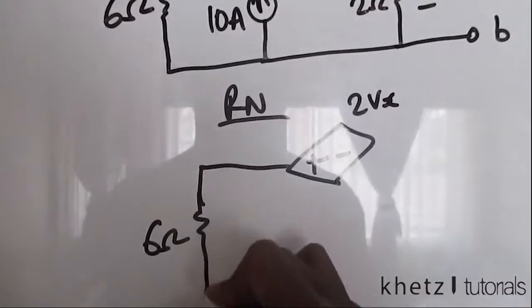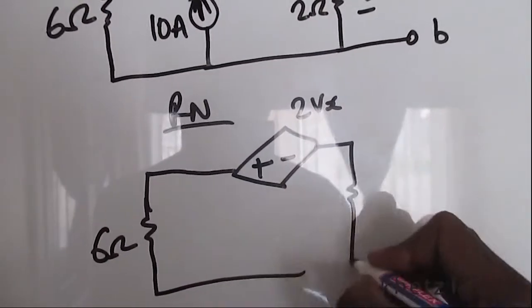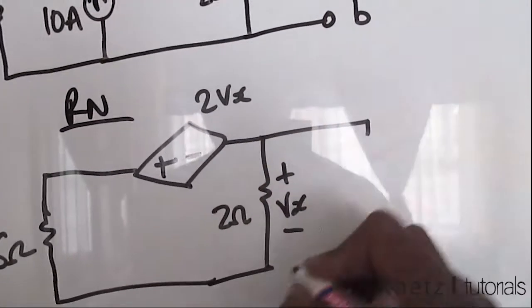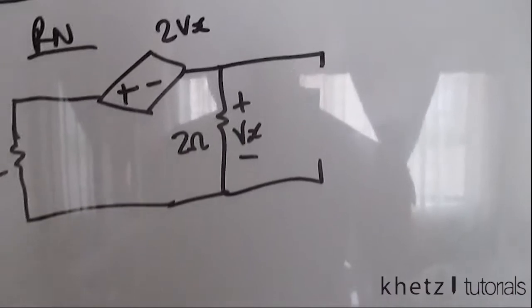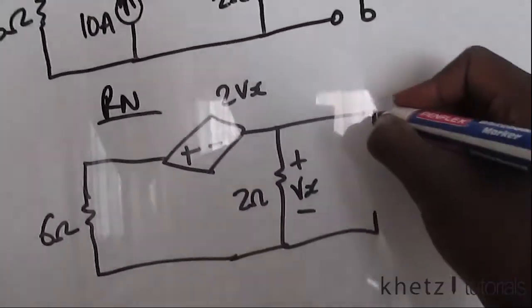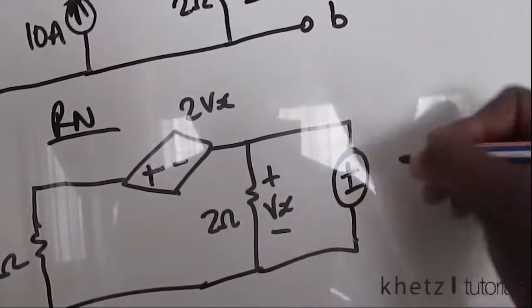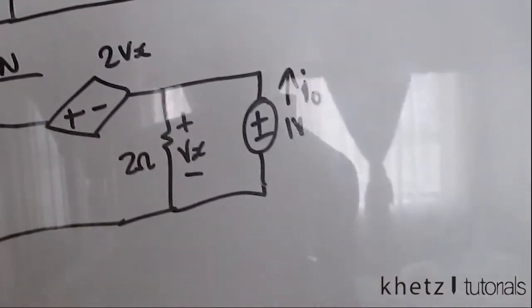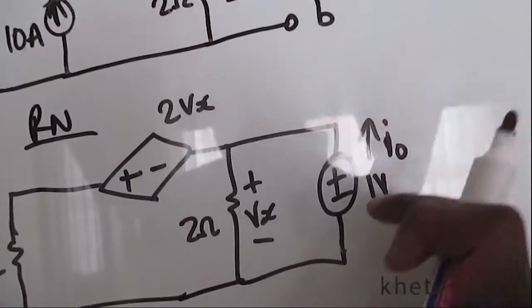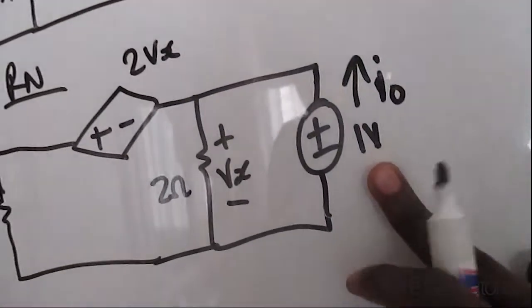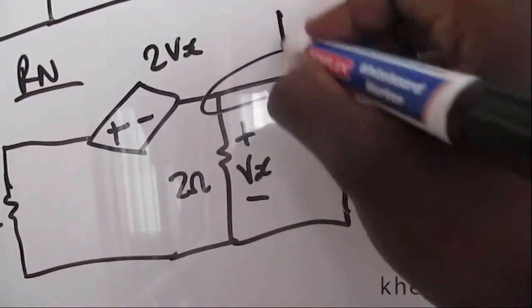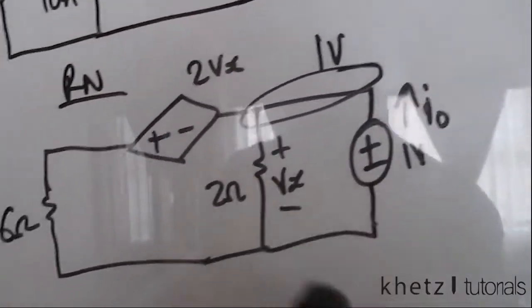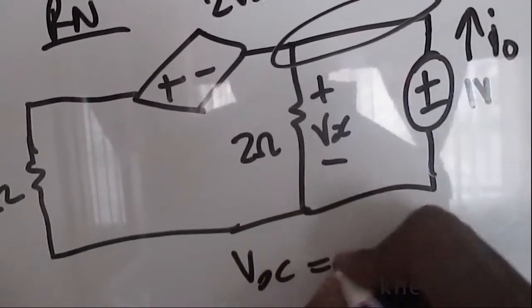So this is what we have: 2Vx and two ohms with Vx indicated. We want to find the Norton equivalent resistance, which means we have to introduce a test voltage source of value one volt. Given that we use the test source of one volt, this node at the top is also one volt. Since we have Vx in parallel with that one volt, then we can conclude that Vx is equal to one as well.